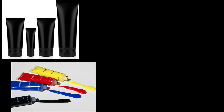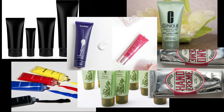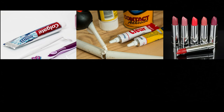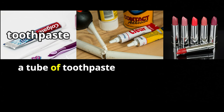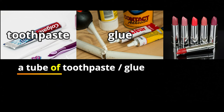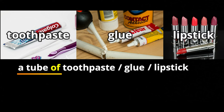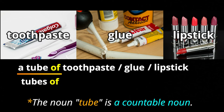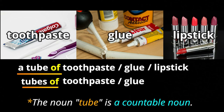Another popular container is a tube. We use it to count things such as toothpaste — a tube of toothpaste, a tube of glue, or even a tube of lipstick. They come in tubes, so we say tubes of toothpaste, tubes of glue, or tubes of lipstick.